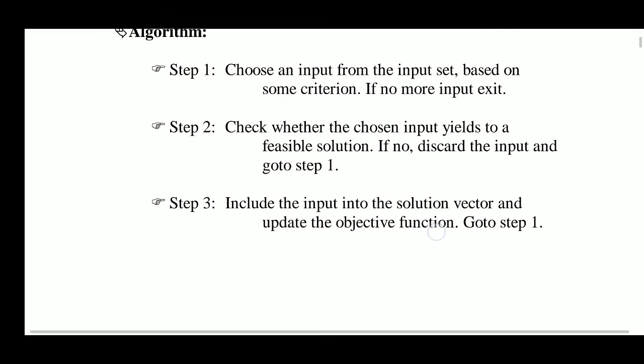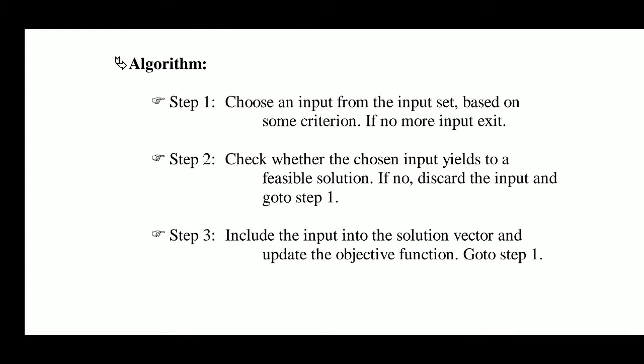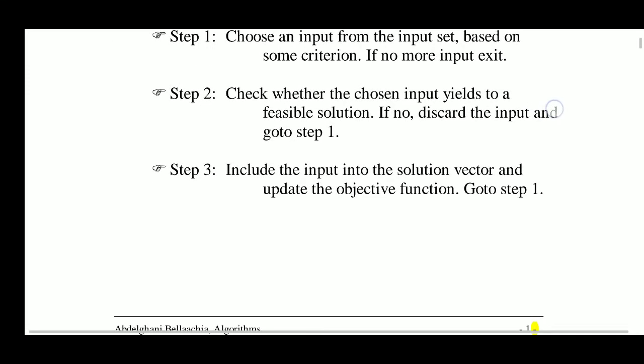The algorithm for greedy is: choose an input from the input set based on some criteria. In fractional knapsack, we took each item which increases the load up to less than or equal to the knapsack capacity, and if an item weight is greater than the remaining knapsack capacity then we take its fractional part.